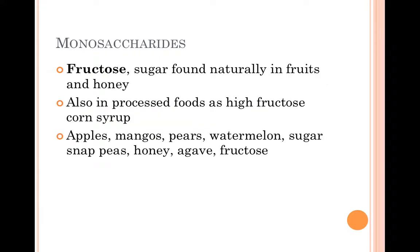The third FODMAP category is monosaccharides. Fructose is a monosaccharide, which is a sugar found naturally in fruits and honey. However, it's also commonly found modified in processed foods, as we all know, as high fructose corn syrup.